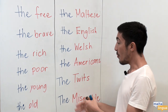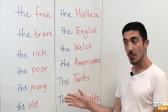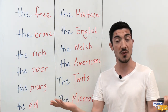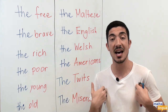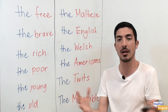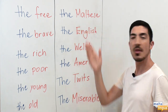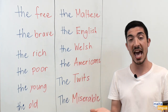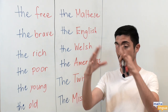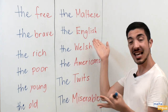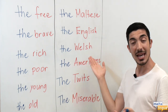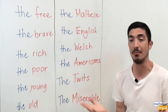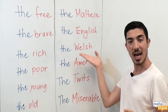Besides adjectives like these, we can also use it with nationalities because nationalities are also adjectives. For example, I am Maltese and I am a part of a bigger group of people, the Maltese. We have many teachers here at Maltalingua who are from the UK and some of them are part of a bigger group of people, the English. My lovely colleague Abby is from Wales so she is a part of a bigger group, the Welsh.